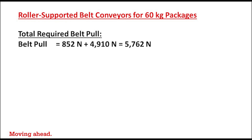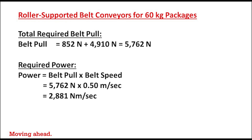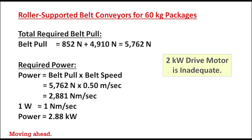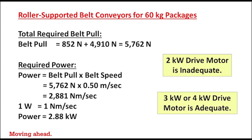Since required power equals belt pull times belt speed, 5762 newtons times 0.5 meters per second yields a required power of 2881 newton meters per second, which equals 2.88 kilowatts. Therefore, a selection of a 2 kilowatt drive would be inadequate. A more appropriate drive selection would be 3 kilowatts or 4 kilowatts.